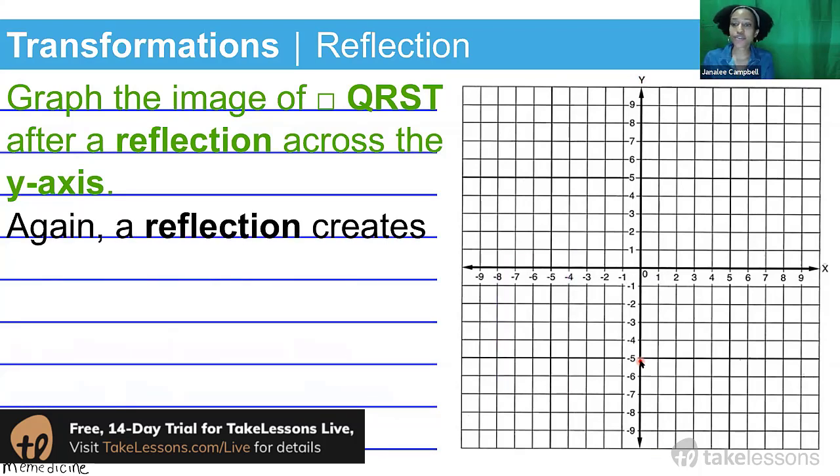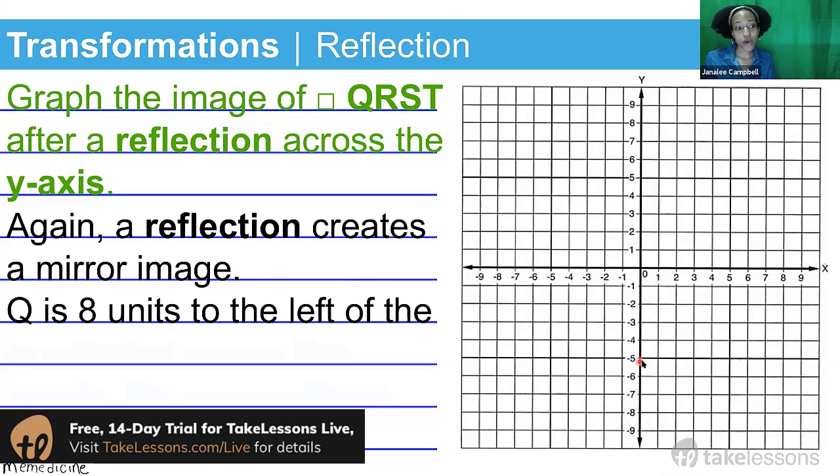So again, just for reiteration, a reflection creates a mirror image. Point Q is eight units to the left of the y-axis.